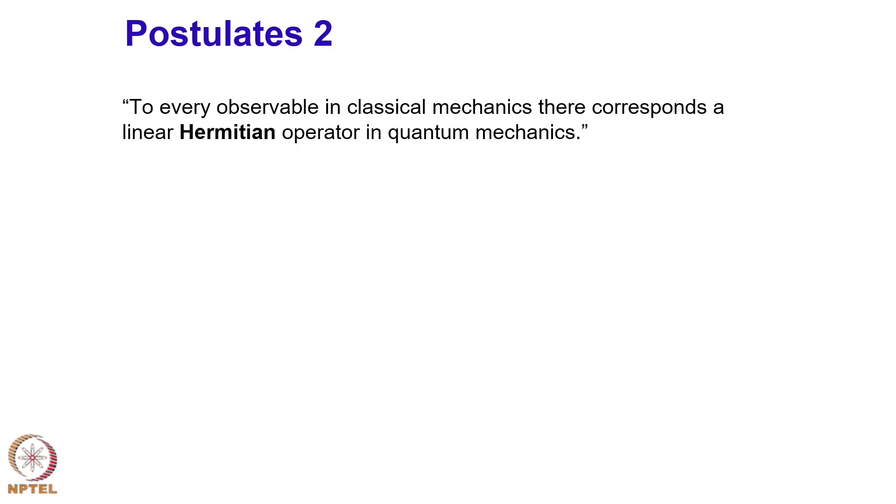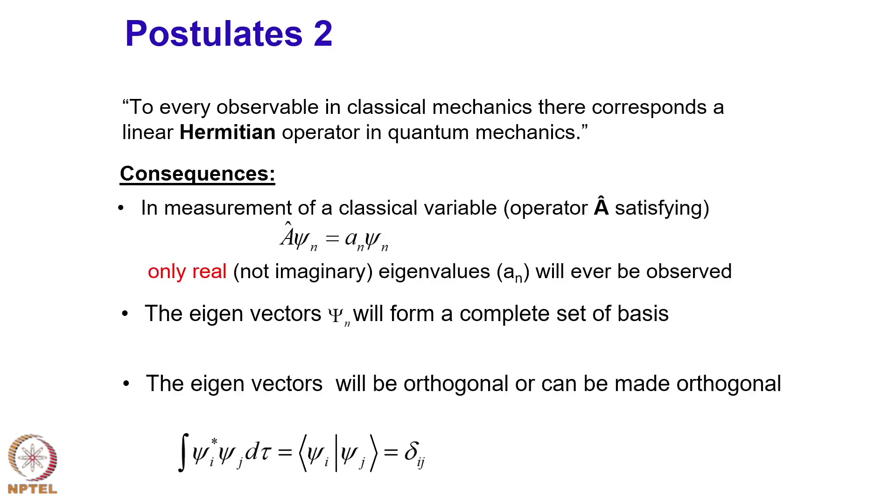The second postulate says that to every observable in classical mechanics there corresponds a linear Hermitian operator in quantum mechanics. Because my operator is Hermitian, the consequences are that in the measurement of a classical variable, operator A satisfying the equation will only give real eigenvalues. There cannot be any imaginary eigenvalues from this solution of the equation.